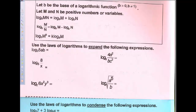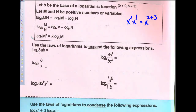We're going to start with the multiplication-addition property. When you multiply inside a logarithm, you can expand the logarithm by adding the two numbers together. It's like the property of exponents — when you multiply like bases, you add the exponents and the base stays the same. Since logarithms and exponentials are inverses of each other, when we multiply, we add.